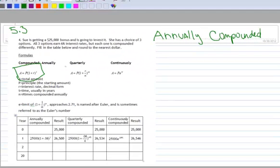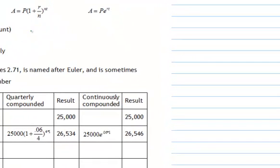We've got A as our total amount. That's the amount you end up with after you have invested it. P is the principal, which is the starting amount. R is the interest rate in decimal form. So for these examples, it's going to be .06 in decimal form. And t is time, usually in years, but not always. And n is the number of times compounded annually.